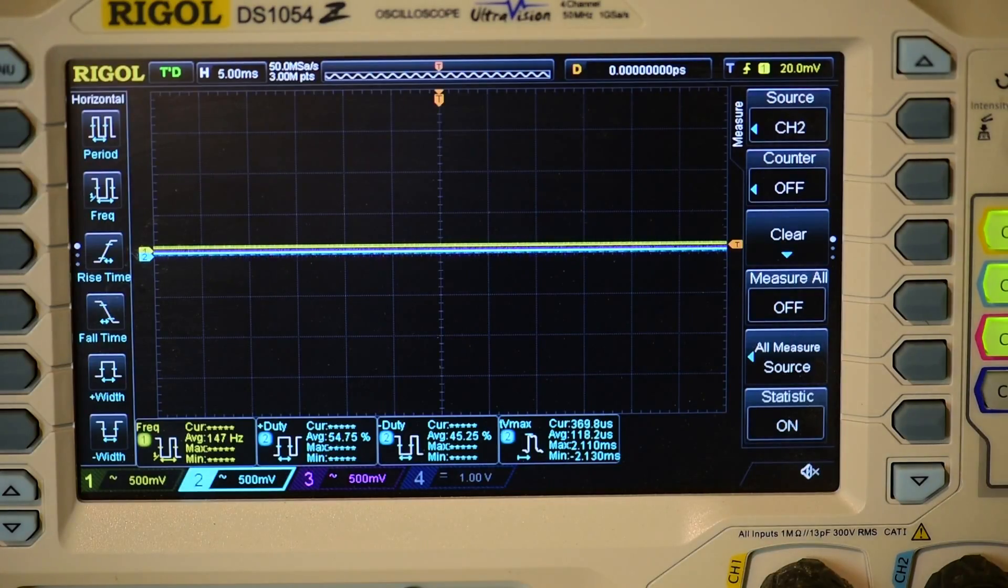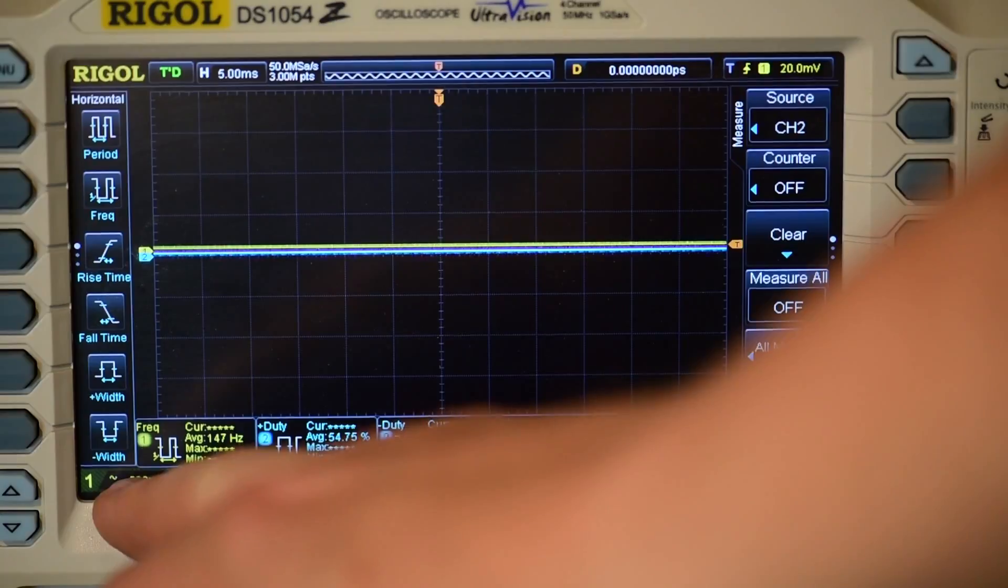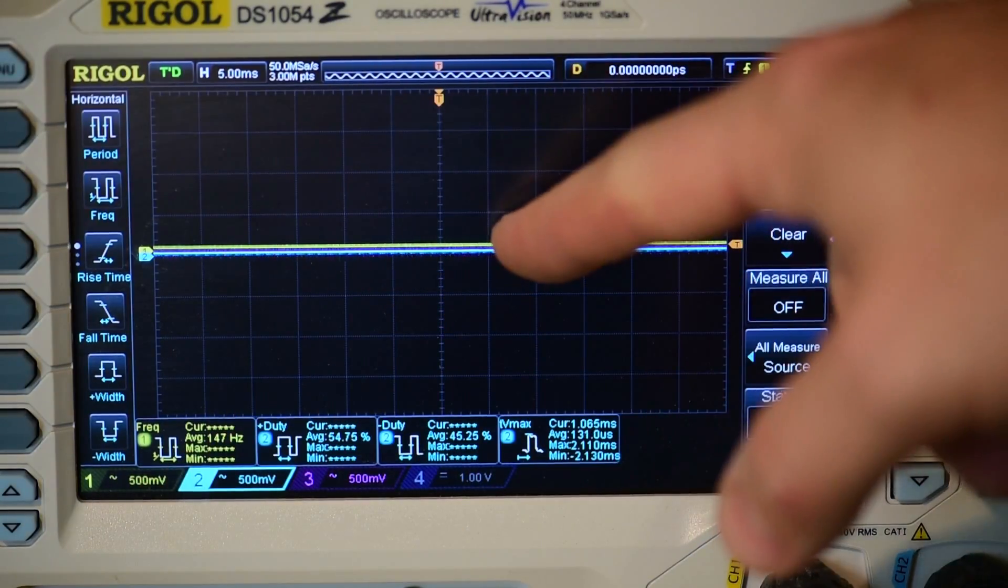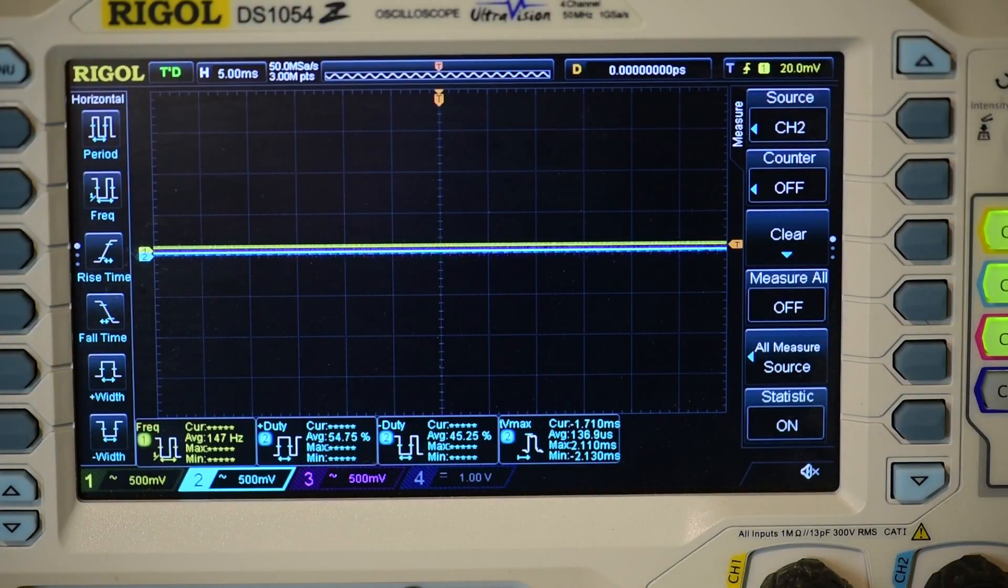Anyway, we have channel one, two, and three. They're all set to 500 millivolts per division, so each one of these squares represents 500 millivolts being generated if the wave gets to that point. I'm going to start the drill press now and let's see what happens. It's going to get noisy.